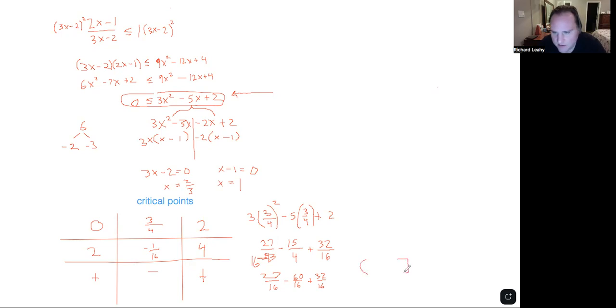Like this, with union. We're going from negative infinity all the way to the first critical point, 2/3, and between it is negative, and then we have going from 1 to positive infinity.